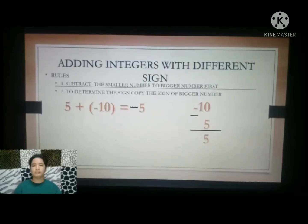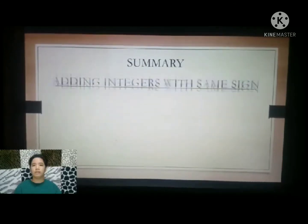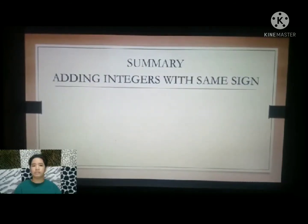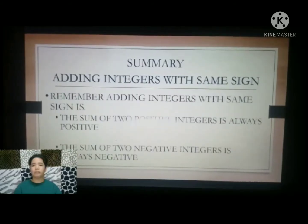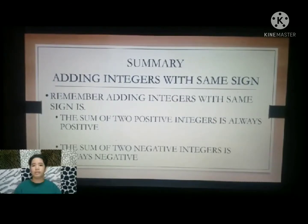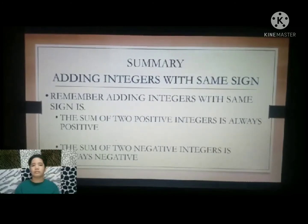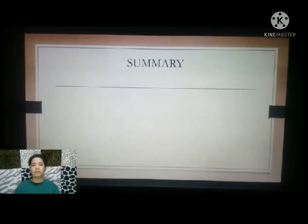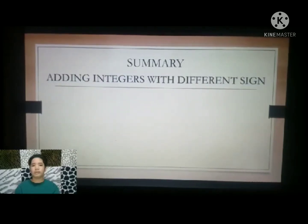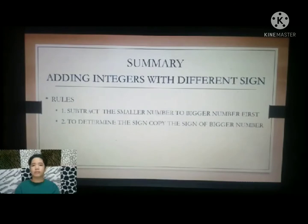Summary. Adding integers with the same sign: the sum of two positive integers is always positive, and the sum of two negative integers is always negative. Adding integers with a different sign — Rule 1: Subtract the smaller number from the bigger number first. Rule 2: To determine the sign, copy the sign of the bigger number.